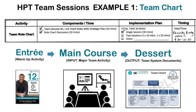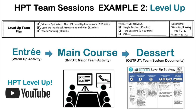Let's take a look at two quick examples of how the planner helps us make sense of this process. The first one is the activity of team role chart — the warmup is a team booster out of that little booklet, then we've got our main activity of discussion and clarification of roles and responsibilities, and the dessert is our updated team chart. The second example is the level up plan — the entrée is a quick YouTube video, then we've got the main activity, and the dessert is our team level up plan completed.